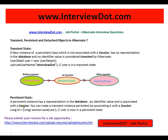A persistent instance has a representation in the database — there will be a row created in the database table, an identifier value (primary key), and it is associated with the session. You can make a transient instance persistent by associating it with the session. For example, you can call session.save() — this line of code makes the transient instance a persistent instance. So the user object is now in the persistent state.